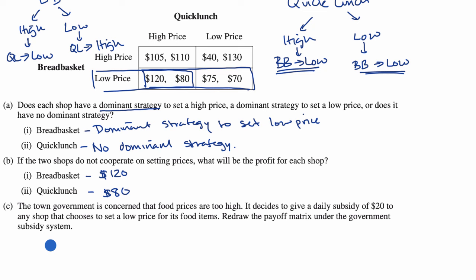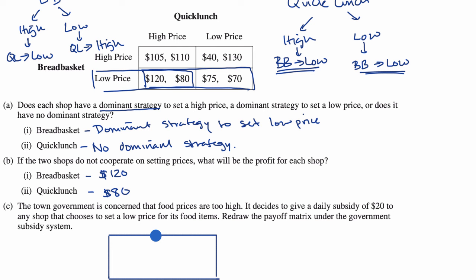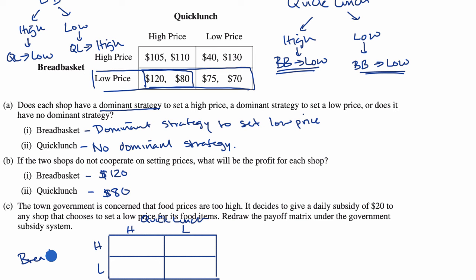Drawing the new two-by-two matrix with Breadbasket on one axis and Quick Lunch on the other, with high and low options. If both shops set high prices, neither qualifies for the subsidy, so the payoffs remain $105 for Breadbasket and $110 for Quick Lunch. If Breadbasket is high and Quick Lunch is low, Breadbasket still makes $40, but Quick Lunch now gets a $20 subsidy, making $130 plus $20 equals $150.